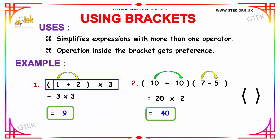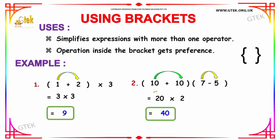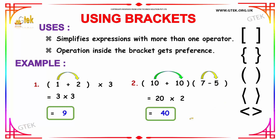Over here, we have two sets of brackets: one enclosing 10 plus 10, which equals 20, and another enclosing 7 minus 5, which equals 2. So 20 into 2 gives you the answer 40. This is how you can do computations with brackets.